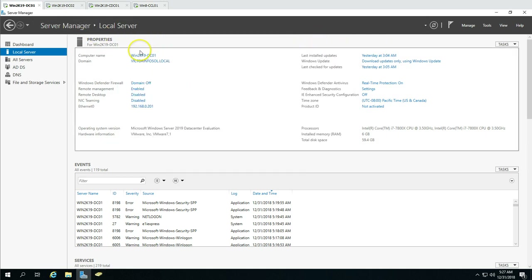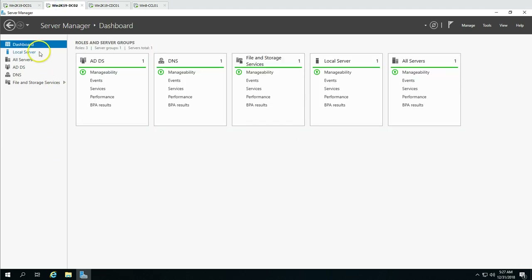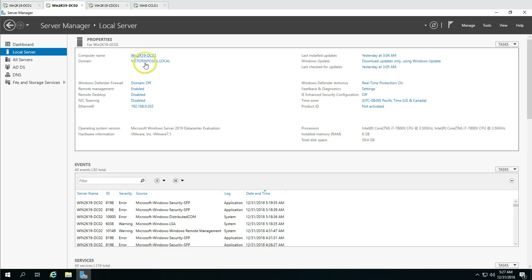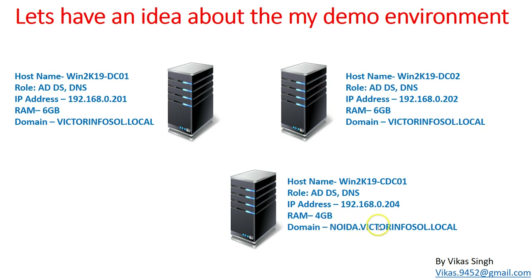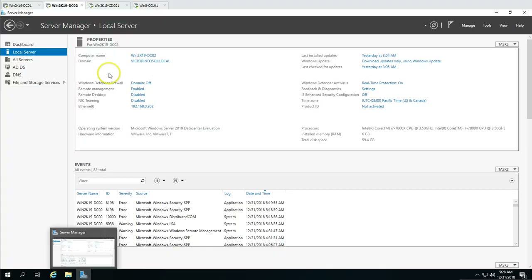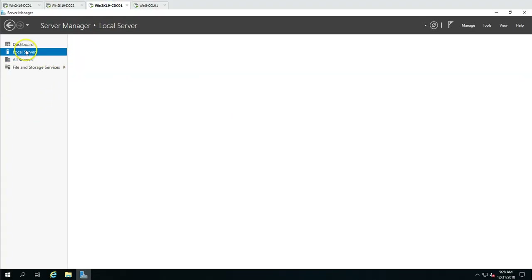The next machine we have is Win2K19 CDC01, which is Child Domain Controller 01. This will also hold Active Directory and DNS roles, and the IP address to configure on this machine is 192.168.0.204. The child domain name is going to be noida.victorinfosoul.com.